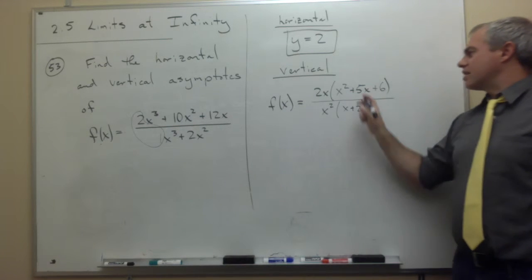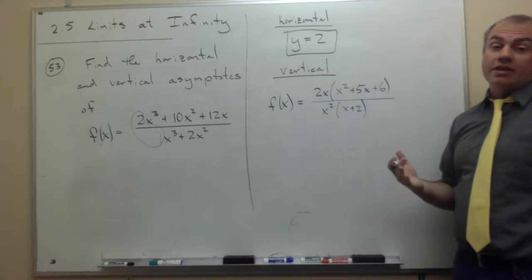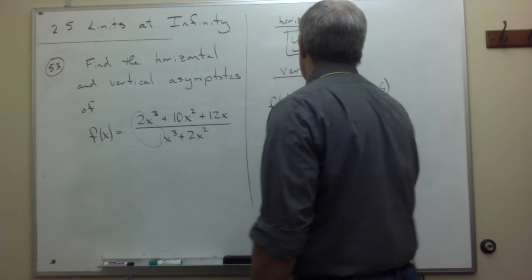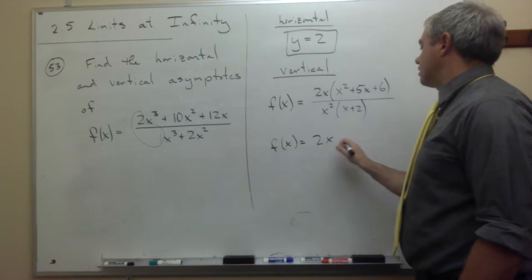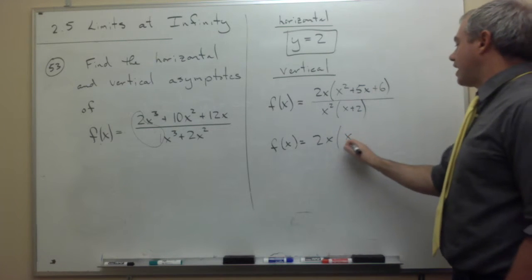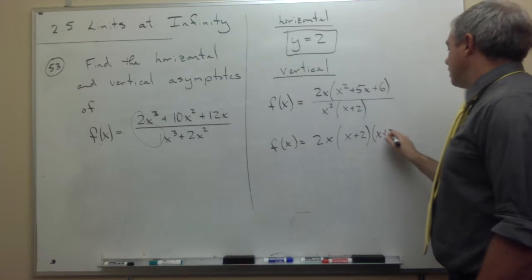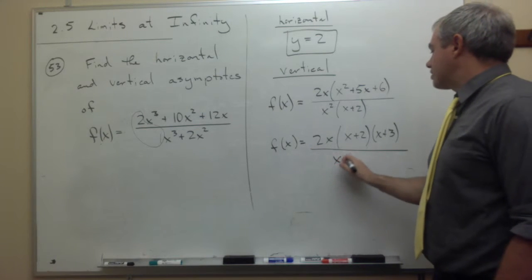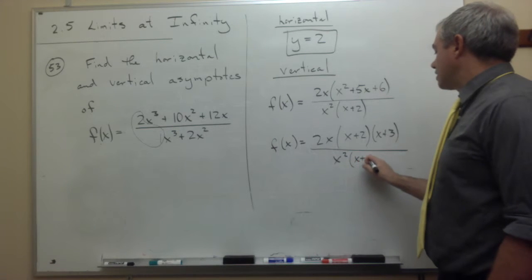And now I can ask, on top here, can I factor this down any more? And the answer is yes. So f of x is equal to 2x, times x plus 2, times x plus 3. And on the bottom, I have x squared times x plus 2.